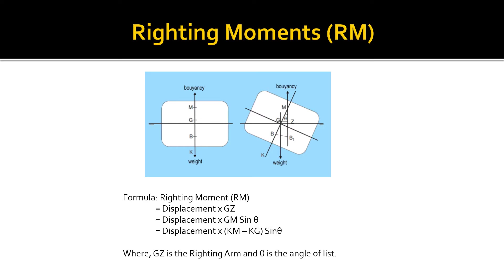The righting moment is also equal to displacement times GM × sine of the angle. GZ is the righting arm, as you can see from the figure, and theta is the angle of list.